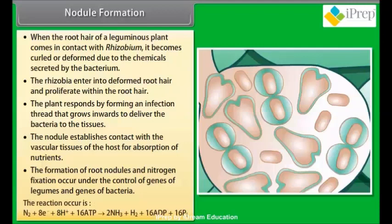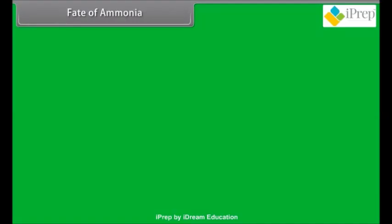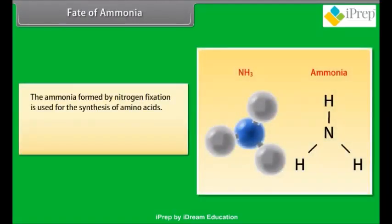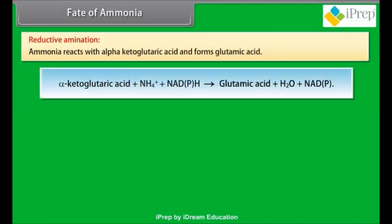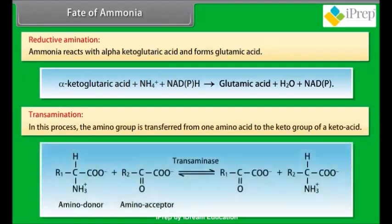The reaction that occurs is: N₂ + 8e⁻ + 8H⁺ + 16ATP → 2NH₃ + H₂ + 16ADP + 16Pᵢ. Fate of ammonia: the ammonia formed by nitrogen fixation is used for the synthesis of amino acids. There are two processes by which amino acids are synthesized. Reductive amination: ammonia reacts with alpha-ketoglutaric acid and forms glutamic acid. Transamination: the amino group is transferred from one amino acid to the keto group of a keto acid.